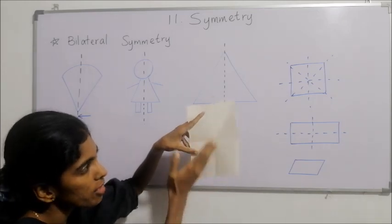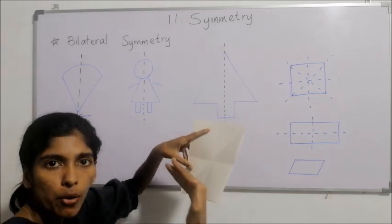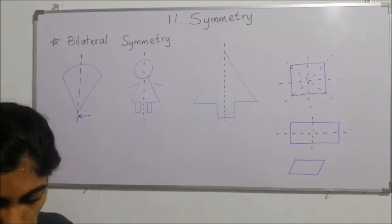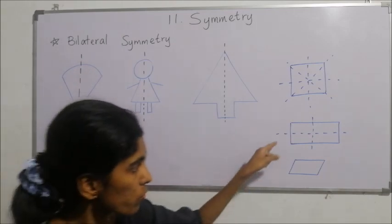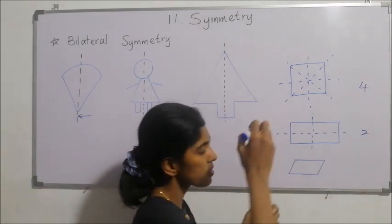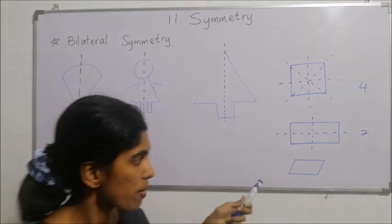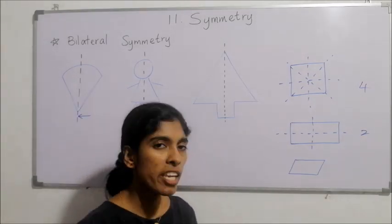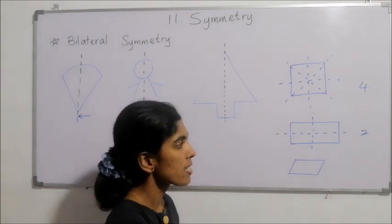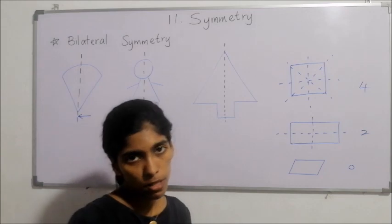These two axes — vertical and horizontal — are correct, but the slant diagonal lines are wrong axes of symmetry. Remember that. So the rectangle has two axes of symmetry. This is a parallelogram, and the parallelogram doesn't have any axis of symmetry — it is not a bilateral symmetric figure; it has zero axes of symmetry.